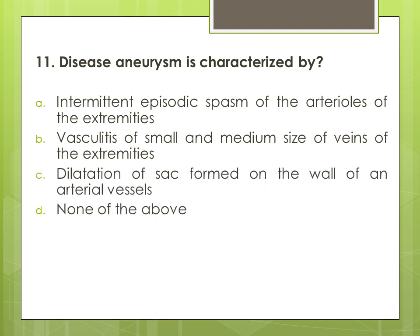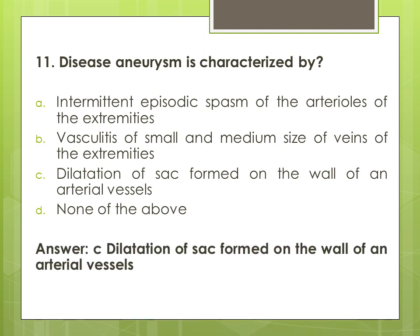Question 11: Aneurysm is characterized by — options are: A. intermittent episodic spasm of the arterioles of the extremities, B. vasculitis of small and medium size veins of the extremities, C. dilatation of a sac formed on the wall of an arterial vessel, and D. none of the above. The correct answer is C. dilatation of a sac formed on the wall of an arterial vessel.